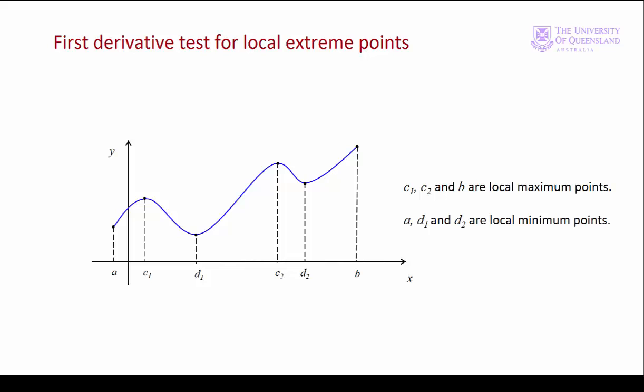Let's look at that diagrammatically. We apply the first derivative test to the internal stationary points. First, C1: below C1 the slope is positive, and above C1 the slope is negative — so we have a local maximum. Looking at D2: below D2 the slope is negative, and above D2 the slope is positive — so we have a local minimum.